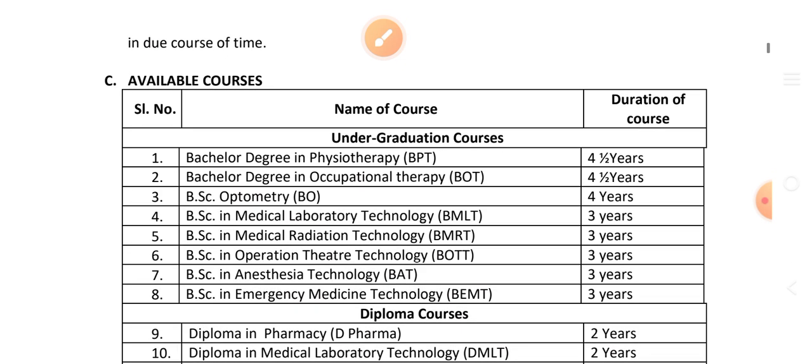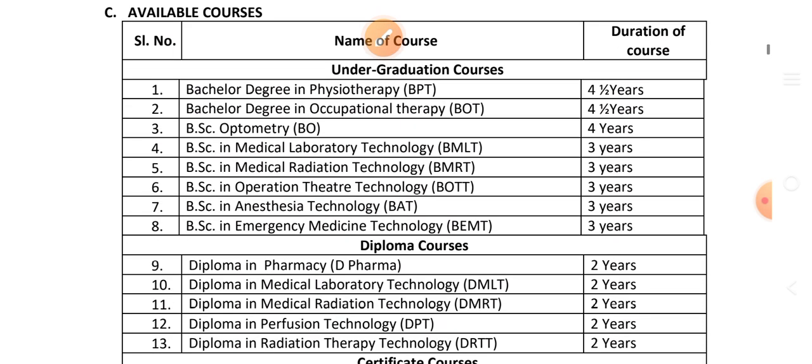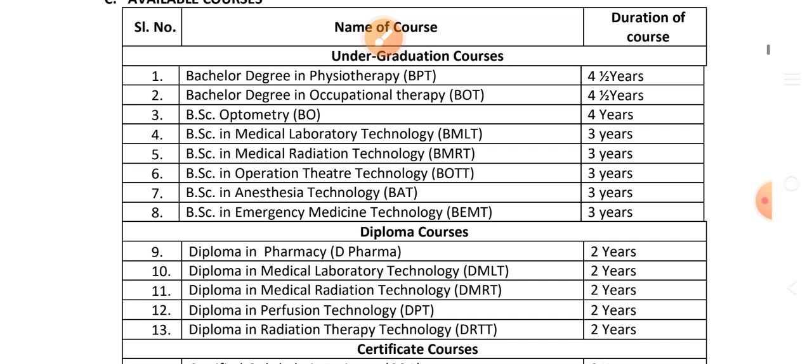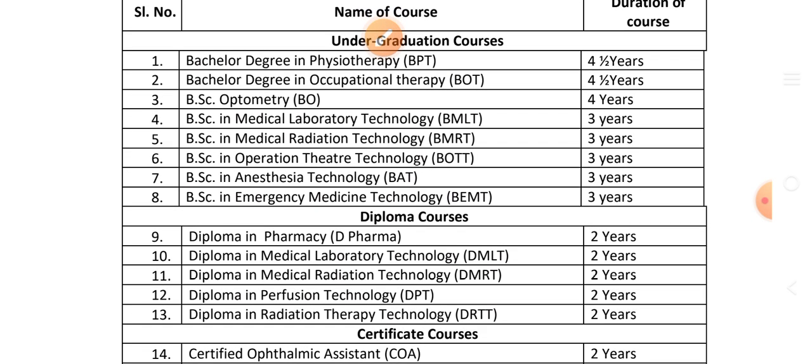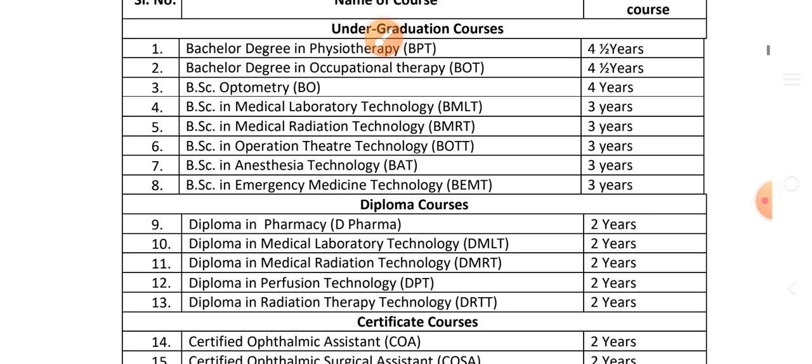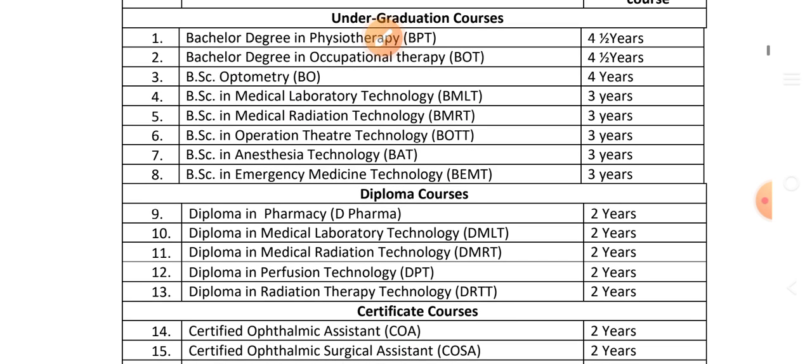Further undergraduate courses include: B.Sc. Anaesthesia Technology — 3 years; B.Sc. Emergency Medicine Technology; and other allied programmes including BMLT and BMRD lateral entry options.